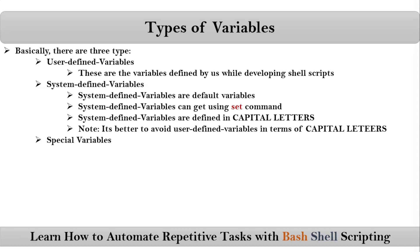The third type of variables are special variables. They are in the form of `$?`, `$$`, `$*`, `$1`, `$2`, and so on. We will discuss special variables in detail in our upcoming sessions.